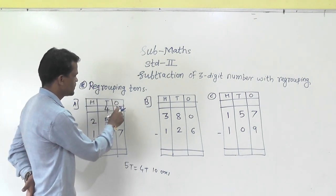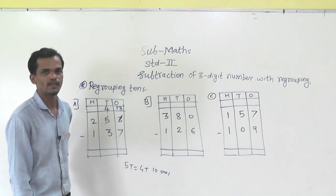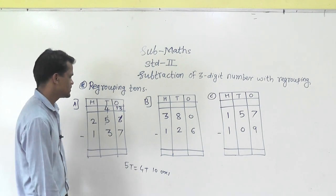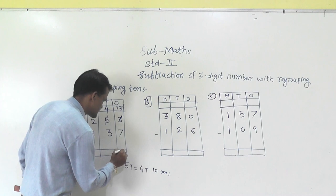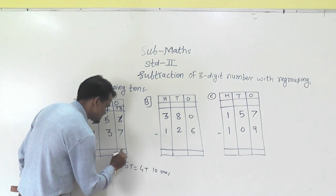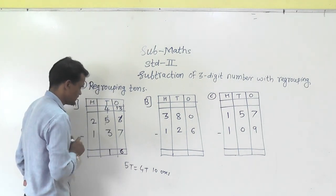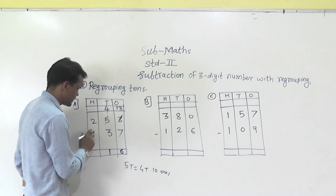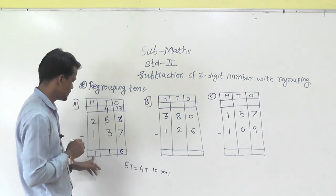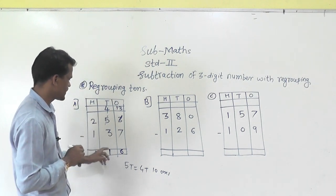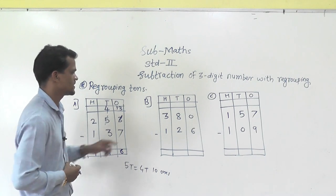Now it is possible: 13 minus 7 is 6. Then 4 minus 3 is 1. Then 2 minus 1 is 1. So 116 is the answer.